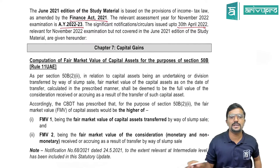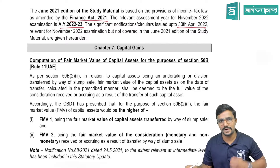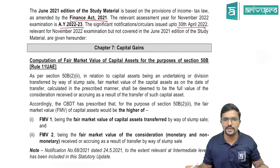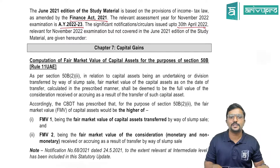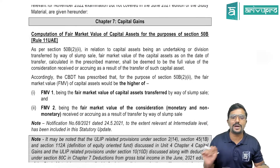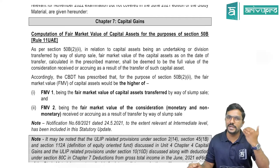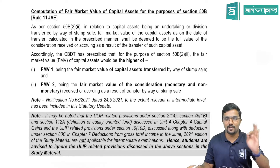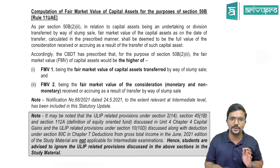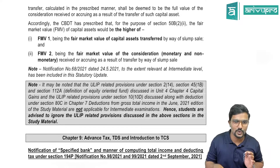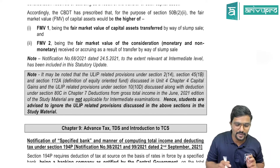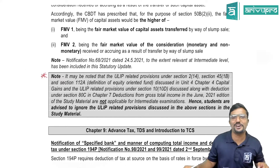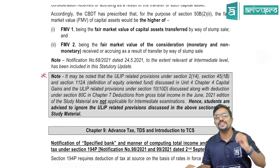The first amendment is with respect to capital gains — that is Chapter 7, the fourth head of income — with respect to fair market value. This was already covered in our May 22 RTP video, so you can go through it there. Now coming to an important note for students.